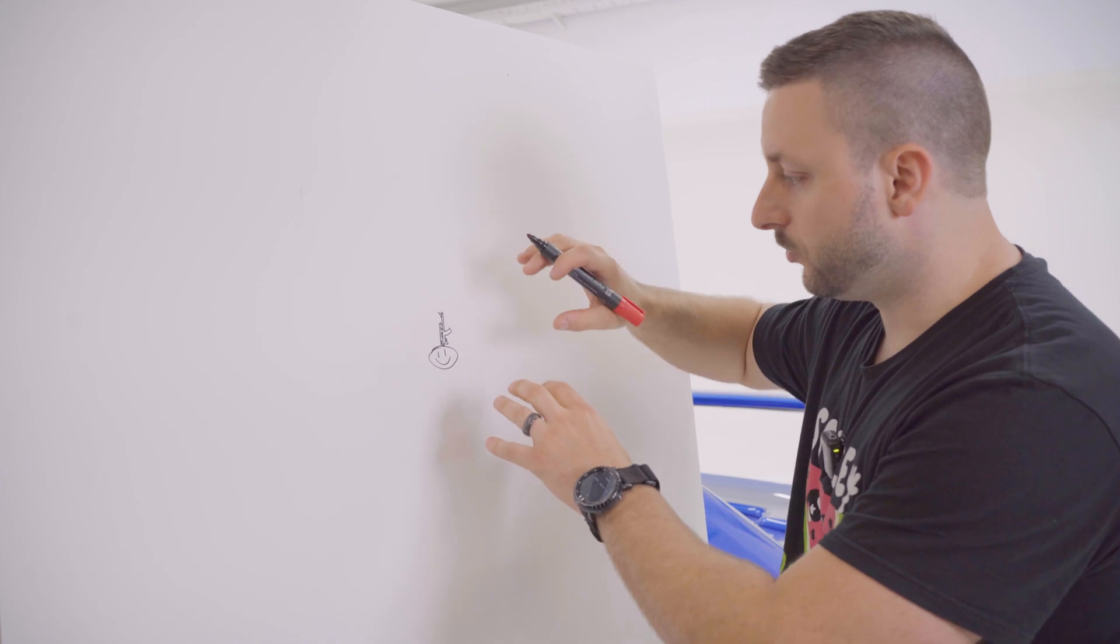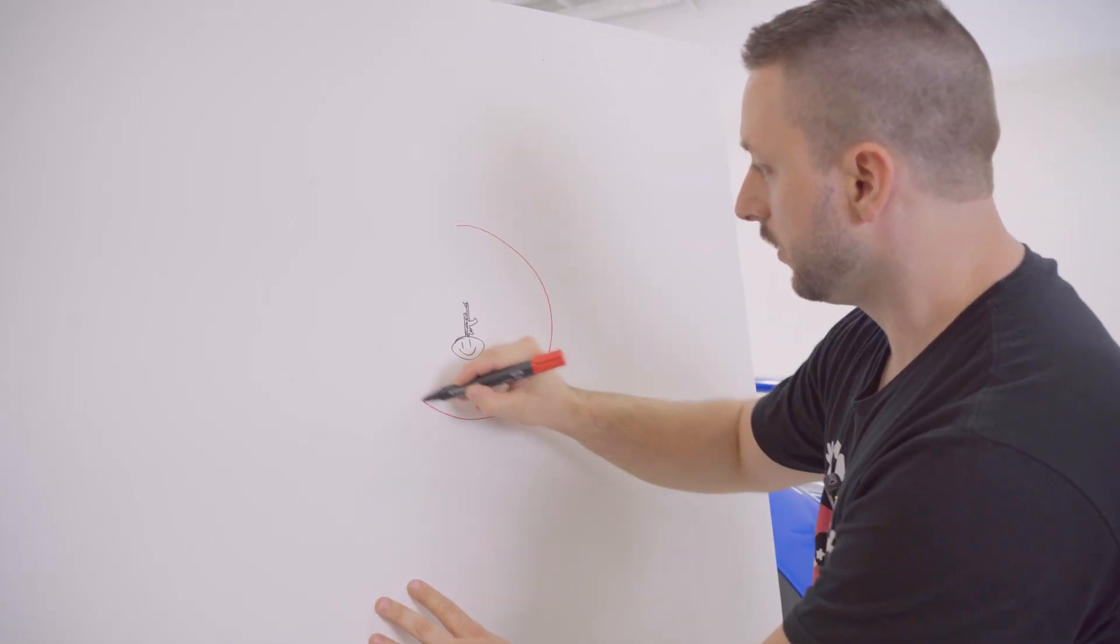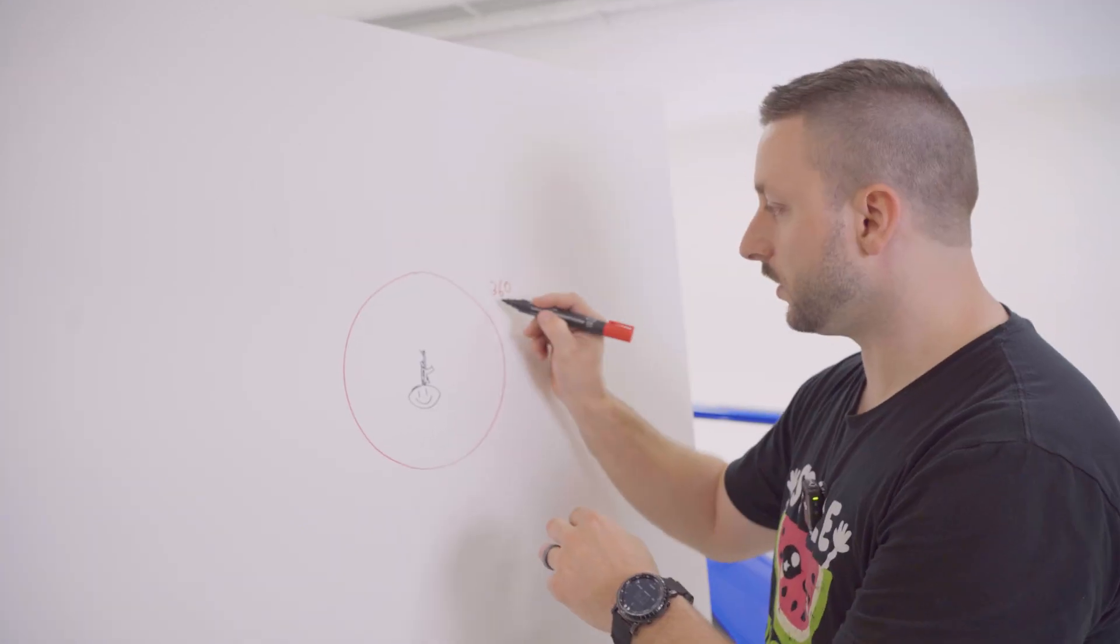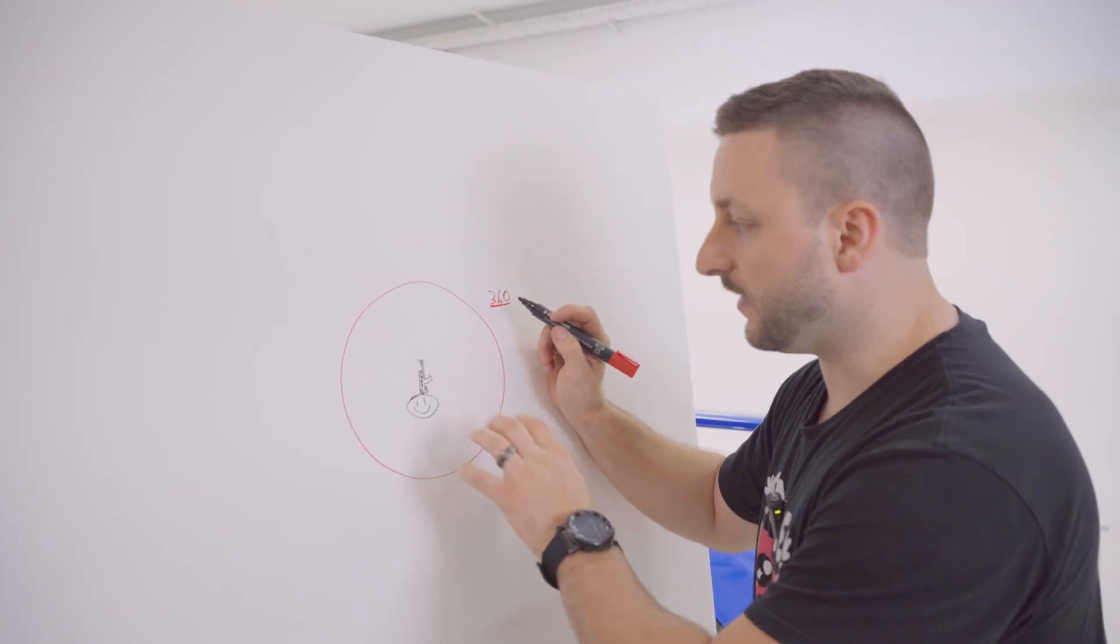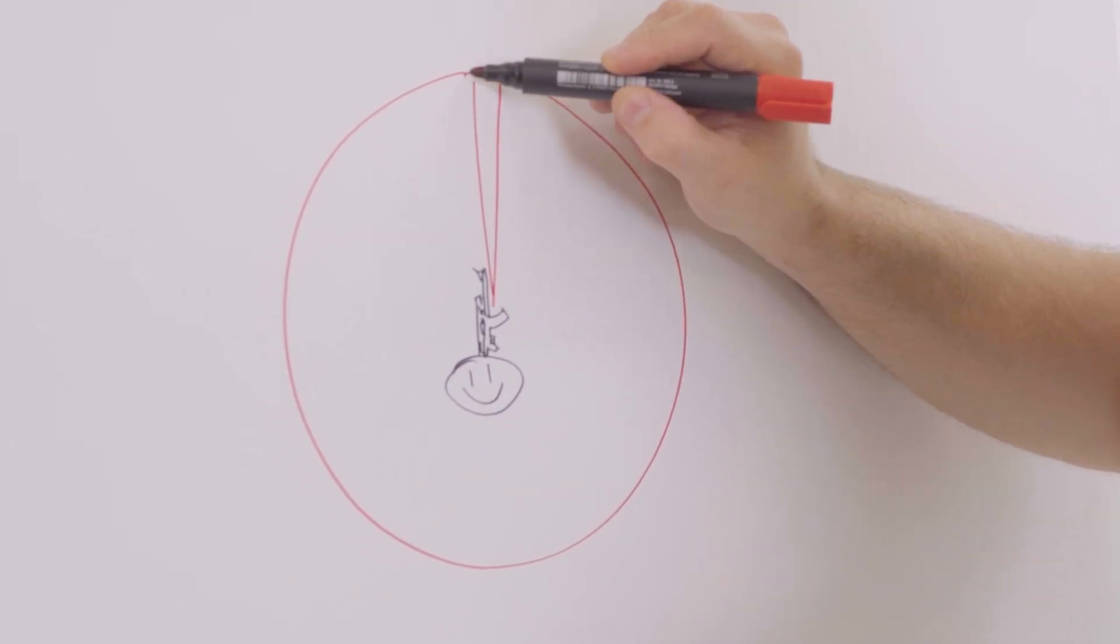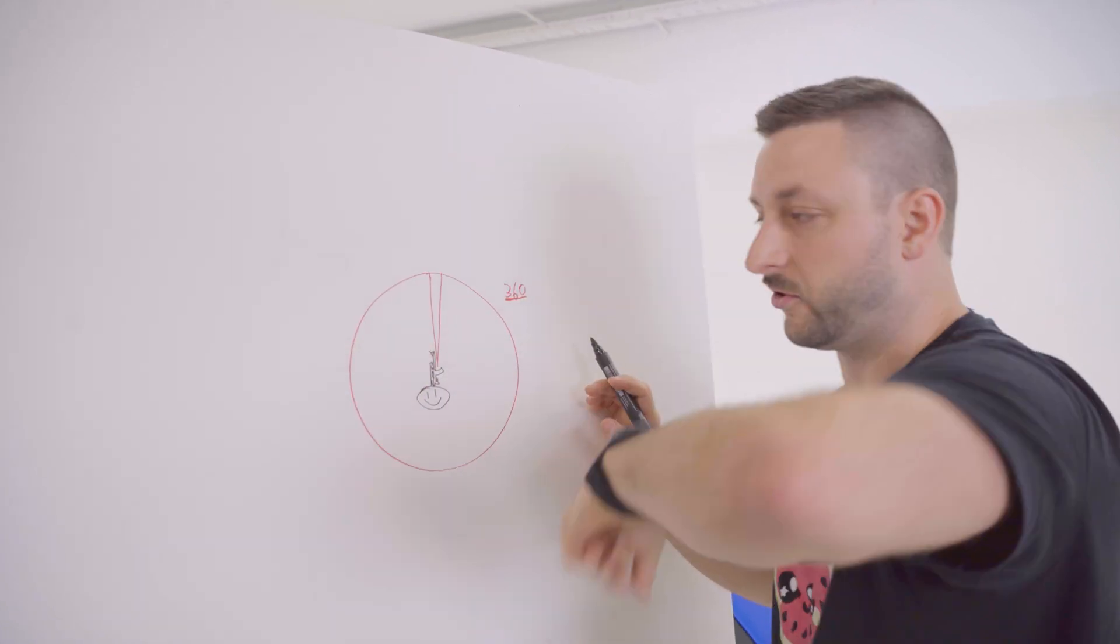So this is a top-down view of our shooter and we have a circle. Circle is 360 degrees, right? So this means that if we divide this circle in equal parts, one degree will be a certain value. We have 360 of these parts to complete the whole circle.